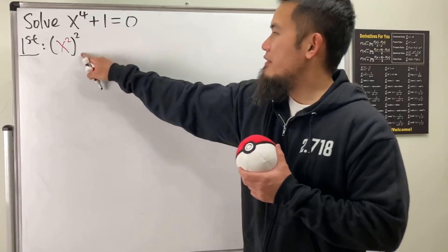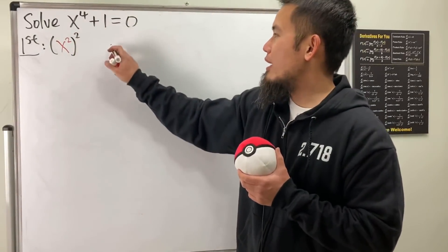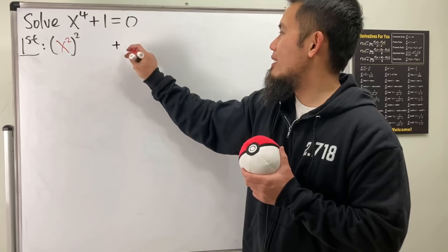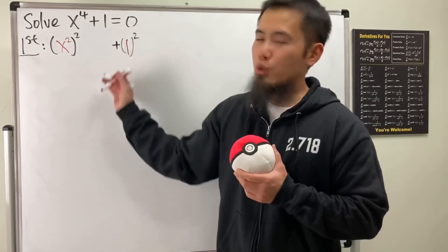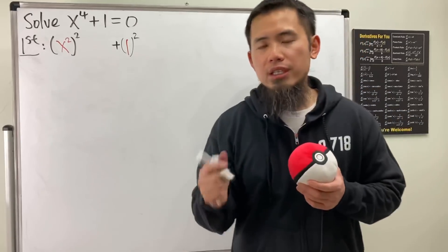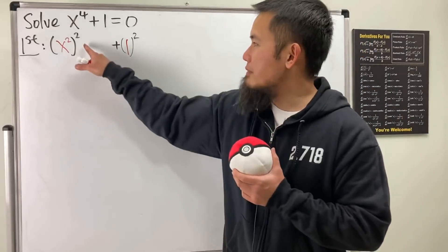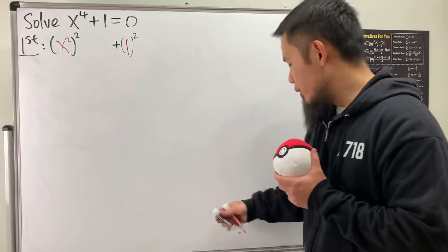And then leave some space and look at the one as one squared. And you see here we do have a sum of two squares and this is actually almost a perfect square if we have some extra term in between, right?